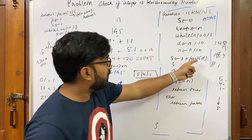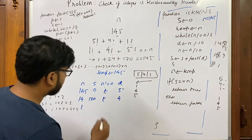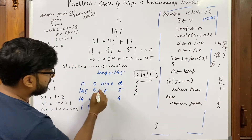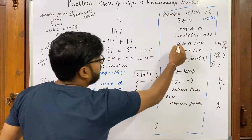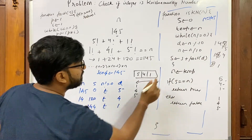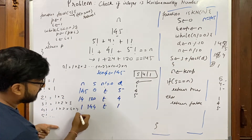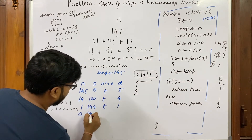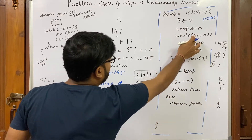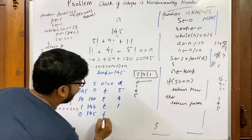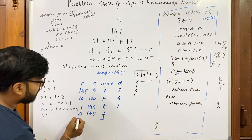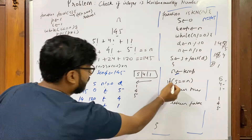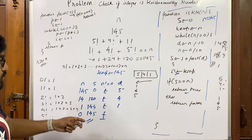sum += factorial(4) = 24, so sum = 144. Next iteration: n ≠ 0 is true, d = 1 % 10 = 1, n = 1 / 10 = 0. sum += factorial(1) = 1, so sum = 145. Now n ≠ 0 is false, loop exits. We set n back to temp = 145. sum == n is 145 == 145, which is true, so we return true. 145 is a Krishnamurti number.